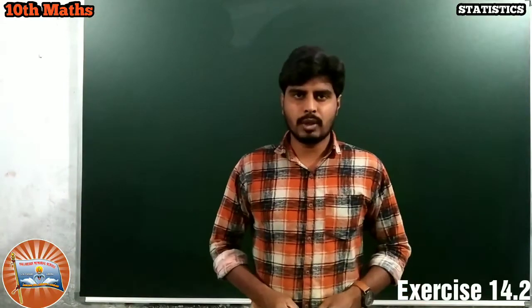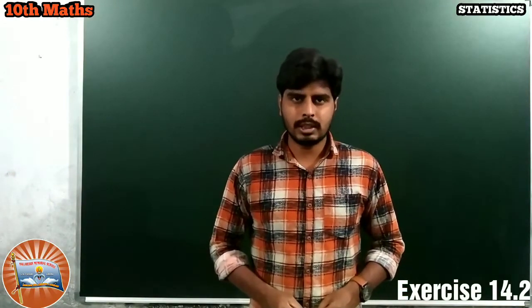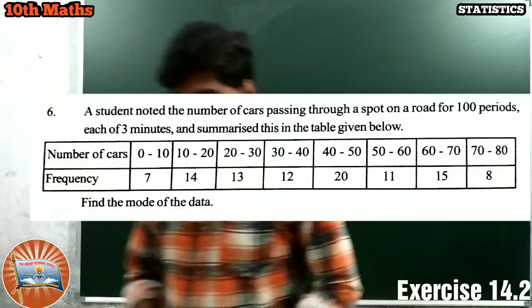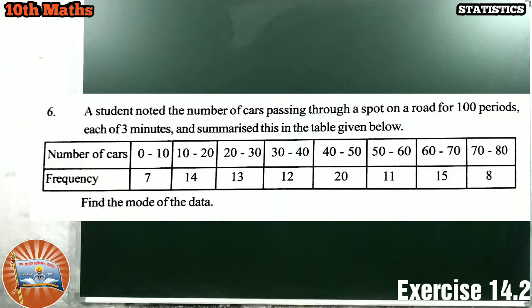Now, exercise 14.2, problem number 6. Look at the question. A student noted the number of cars passing through a spot on a road for 100 periods, each of 3 minutes, and summarized this in the table given below. Given number of cars and frequency.